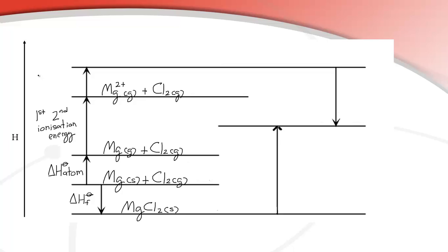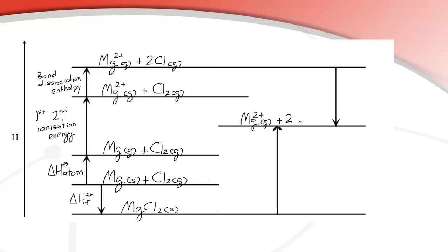Next is the bond dissociation enthalpy — we're going to break the bond between the two chlorine atoms to give us two separate chlorine atoms as a gas, alongside Mg²⁺ as a gas. Then we need to take those two electrons from the magnesium and add them to the two chlorine atoms. That's the first electron affinity, multiplied by 2, because there are two chlorine atoms and we need to make two negative chloride ions.